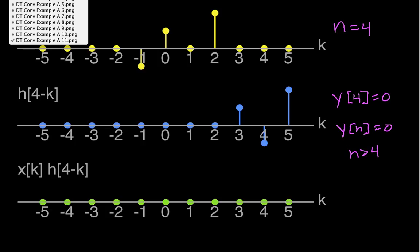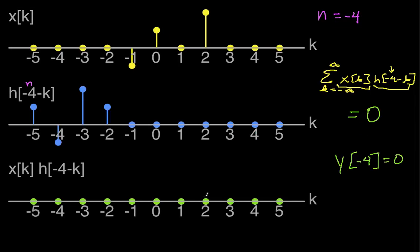If we go back to this case where n was equal to negative four, if n is less than negative four, then my h of n minus k will be this guy, but shifted farther to the left. And so again, I'll never have a part where the non-zero part of x and the non-zero part of h of n minus k overlap. So for n less than negative four, y of n is zero.